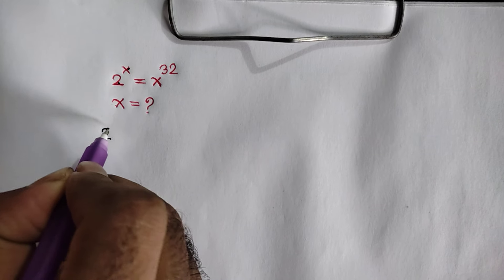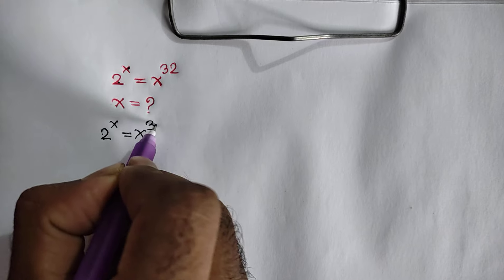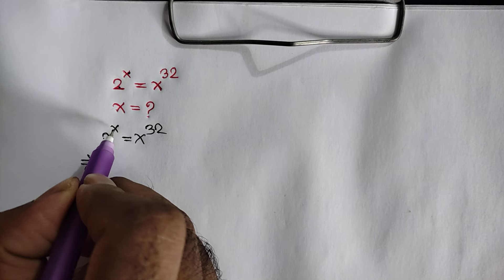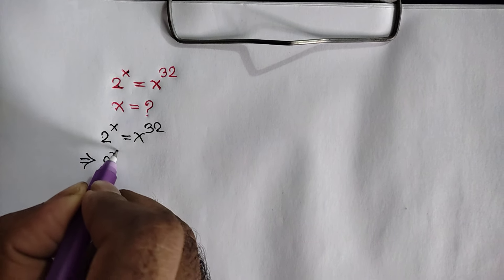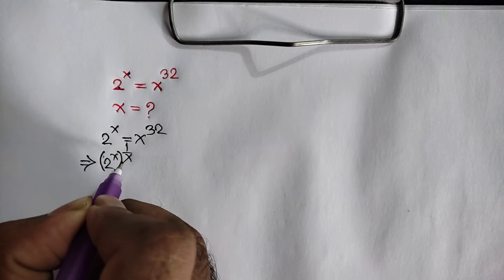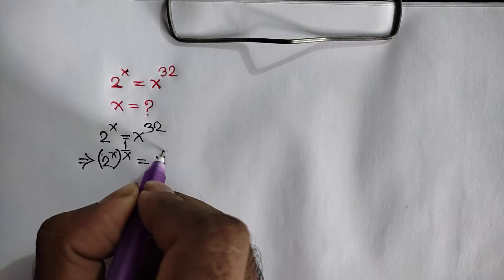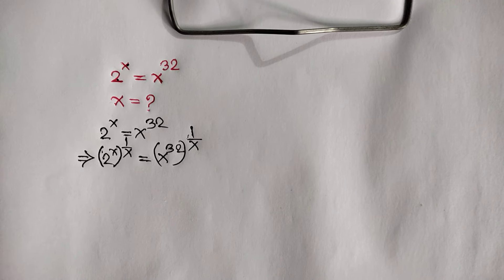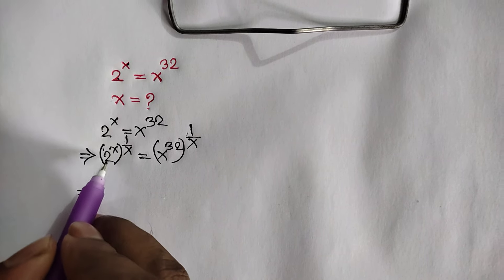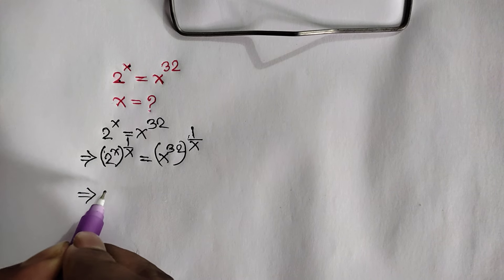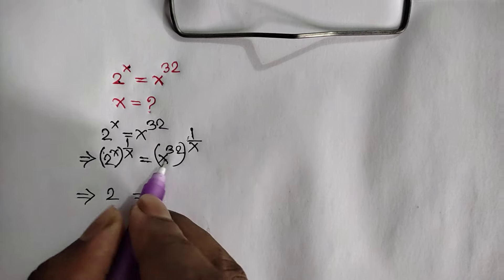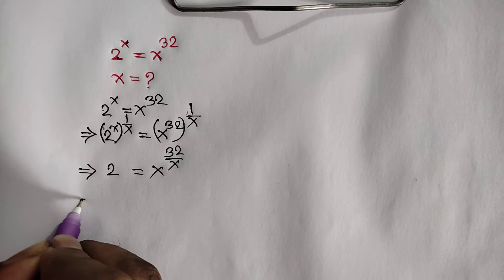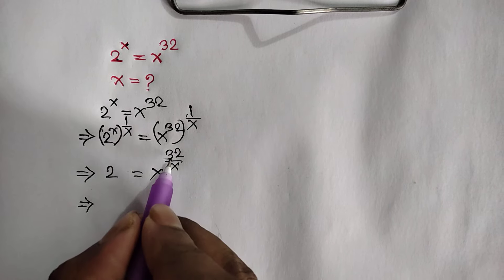We have given 2 to the power x is equal to x to the power 32. In the first step we move this power x, so we can write here 2 to the power x over 1 to the power x is equal to x to the power 32 over 1 over x. This x cancels out this x, so it will be remaining 2 to the power 1, which is the same as 2.